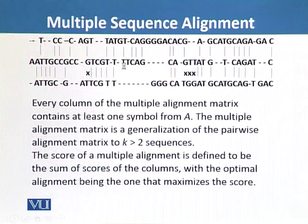Every column in the multiple sequence alignment matrix we have constructed is a generalization of the pairwise alignment matrix to k greater than 2 sequences. So if we want to do multiple sequence alignment, k should be greater than 2. As in this case we have three sequences of DNA.